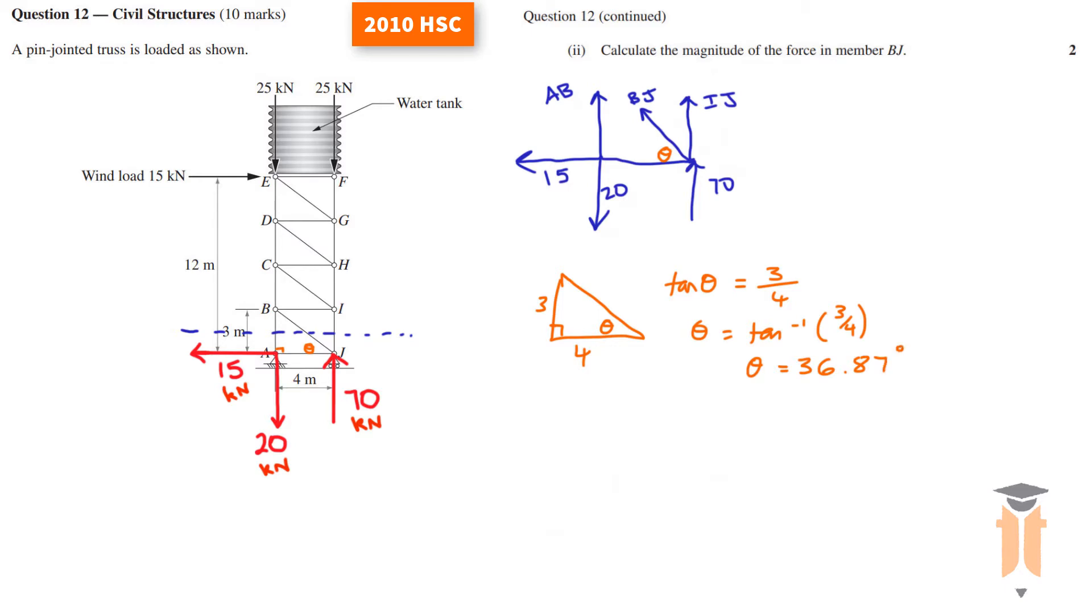Now that I've got my angle, I can apply the sum of forces in the horizontal direction. Sum of forces in the horizontal direction is equal to 0, considering right as positive. 15 going to the left so minus 15. Now we need to break up BJ into its components. This is my starting point so to get to its destination I go left and then up. There's my right angle and this is my 36.87 degree angle. The horizontal component becomes BJ cos 36.87.